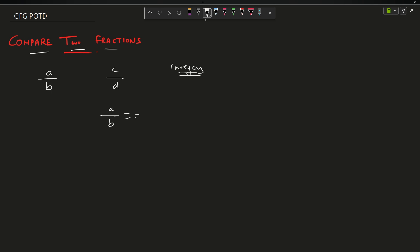Suppose a by b equals c by d, that is both fractions are the same. In that case return 'equal'. The string should represent equal, this is my return type.